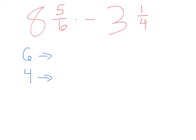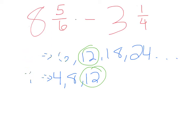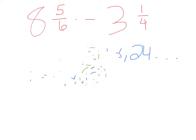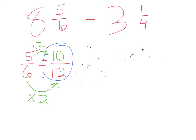Drawing those out: 6 times 1 is 6, 6 times 2 is 12, 6 times 3 is 18, 6 times 4 is 24. Now our 4s: 4 times 1 is 4, 4 times 2 is 8, 4 times 3 is 12 — there it is. Our very first common multiple is 12. So I need to change 5 sixths to something over 12: 6 times 2 equals 12, so 5 times 2 is 10, giving us 10 twelfths. 5 sixths no longer exists.